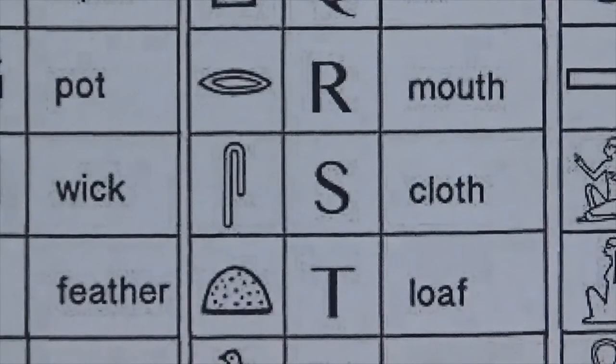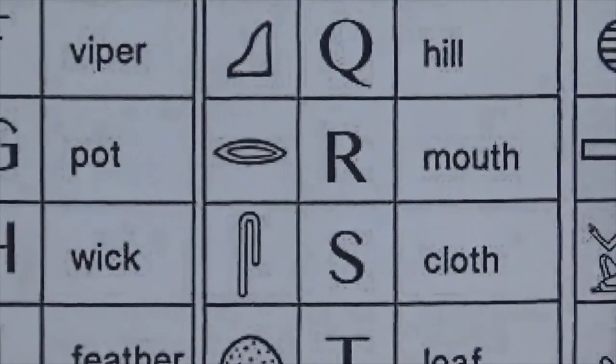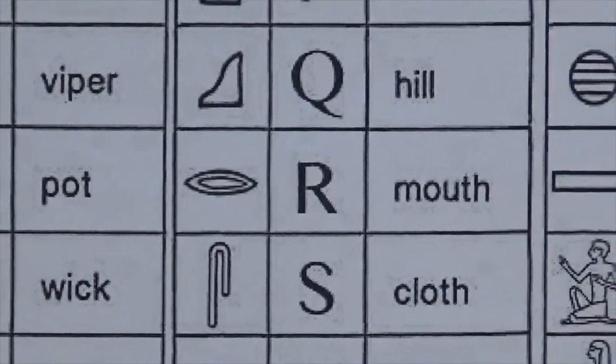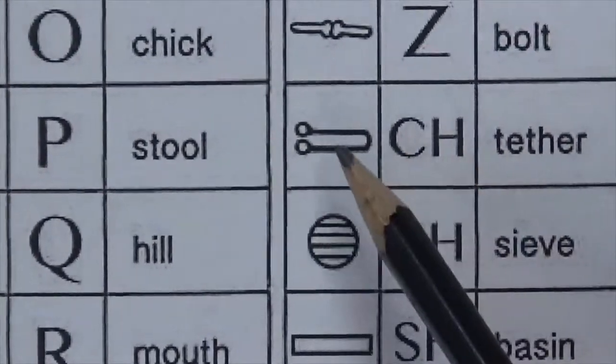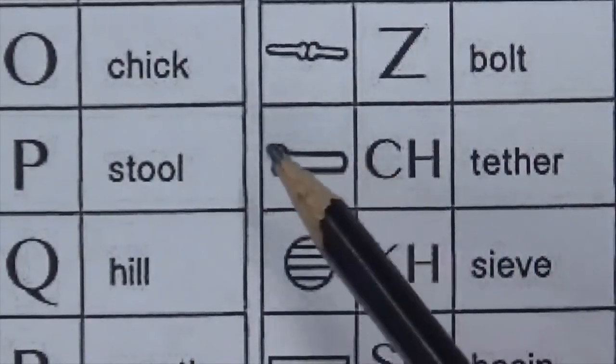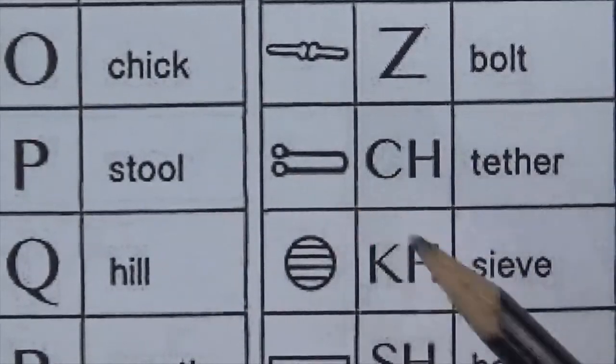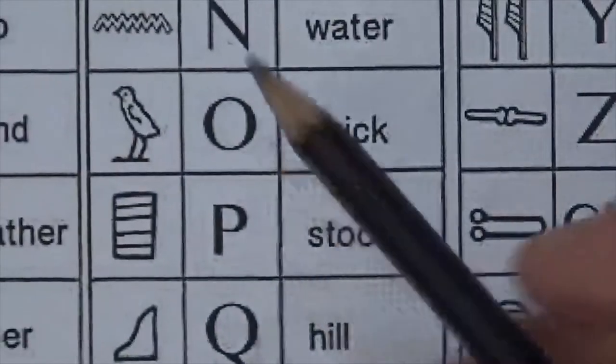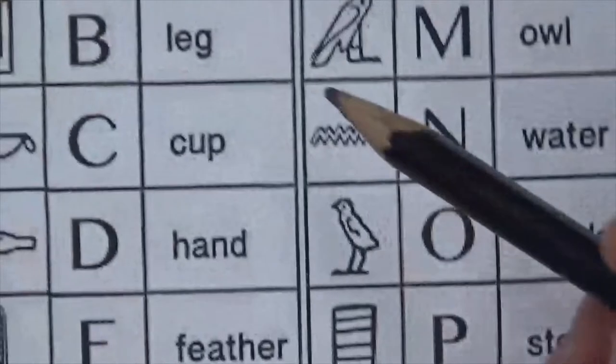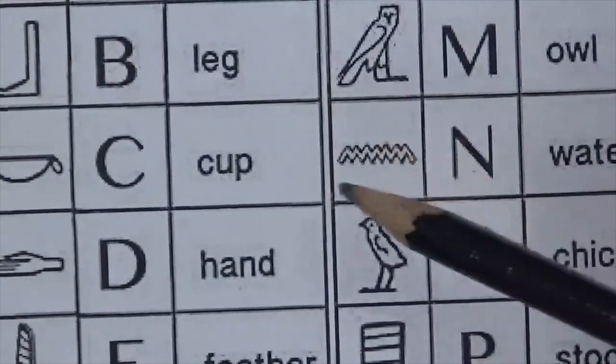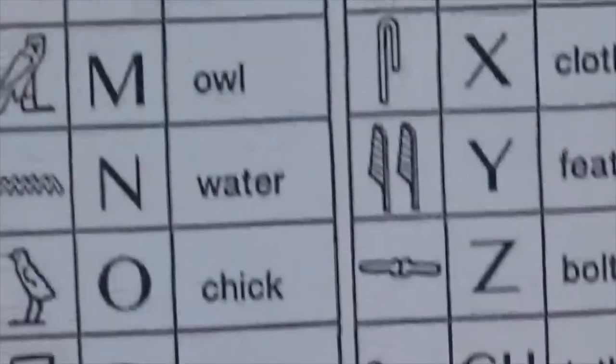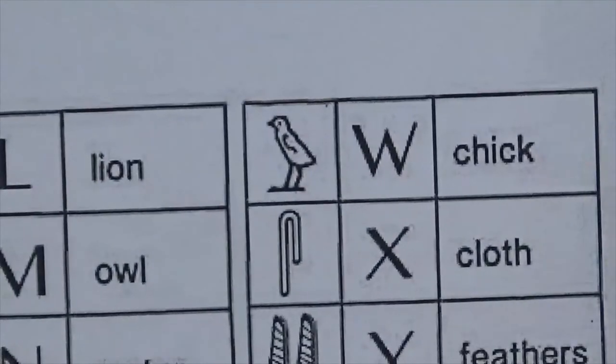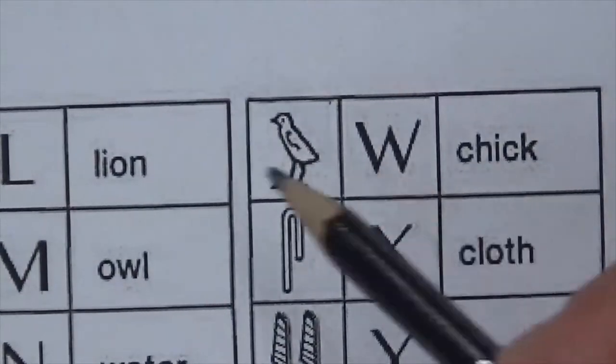And if your name starts with a C but it makes a CH sound like Charlie, you'd want to use this symbol for a tether. It's like a rope you can connect things with. So anyway, pick the symbols or the hieroglyphs that make the sound. So I'm gonna sound my name out. I'm gonna write my last name. You can write your first name, but my name is Wedge, so I'm gonna write Wedge.